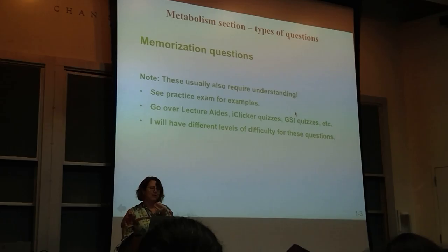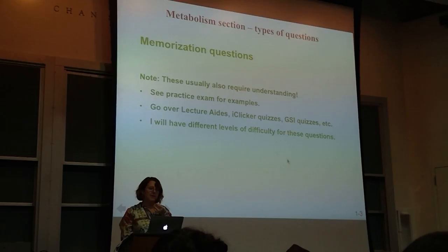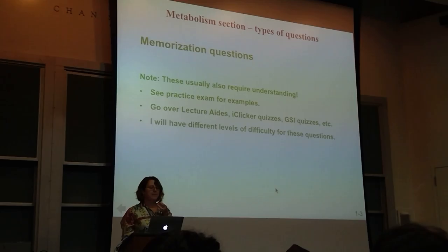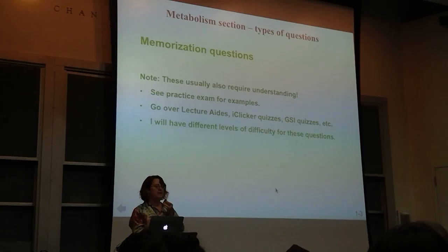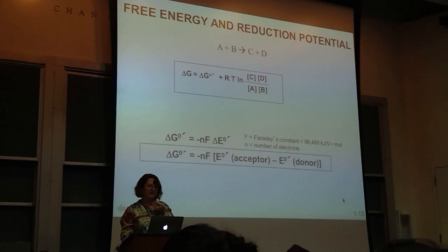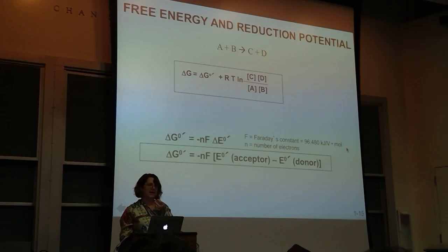Memorization is part of it, but it also requires understanding. Review all of these topics; go back to the book if there's something you don't understand. I'll have different levels of difficulty, just like on the practice exam—some more complex based on memorization, others pretty straightforward. For free energy and reduction potential, you do need to know these equations. You'll always be given the constants and won't be using calculators, so there'll be simple numbers. You do need to know the delta G for ATP hydrolysis of −30.5 kJ/mol as an important reference point.